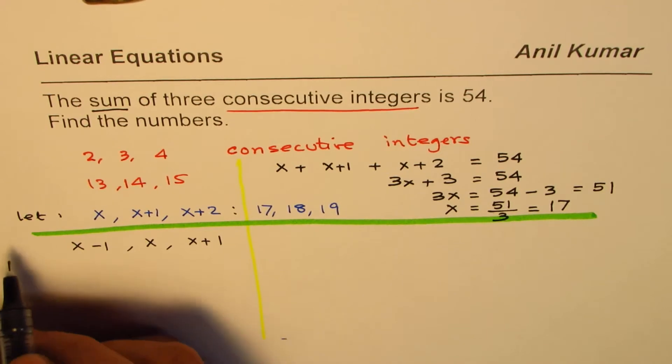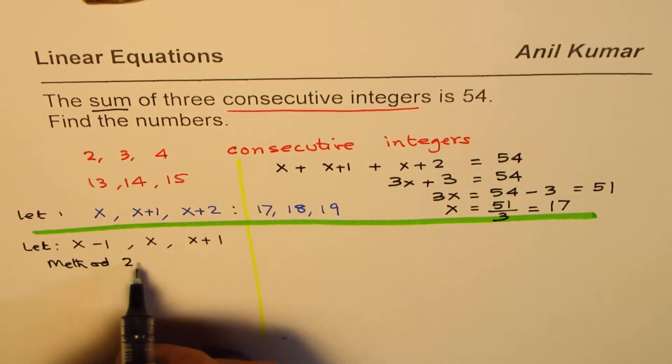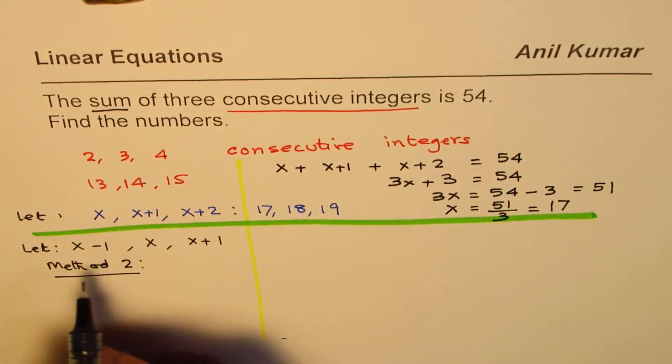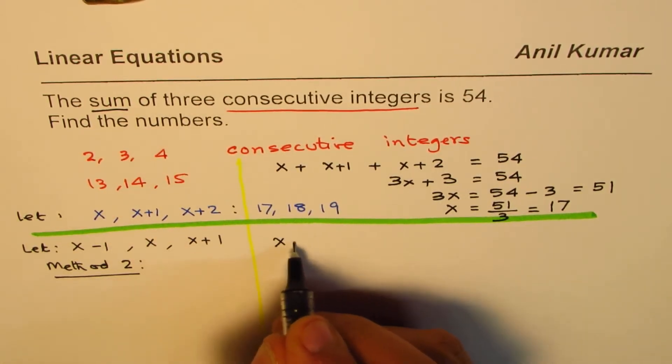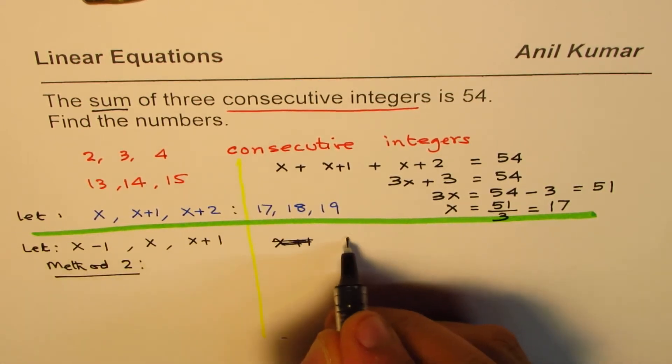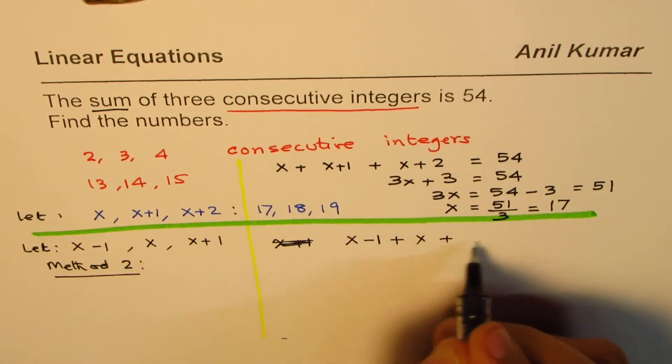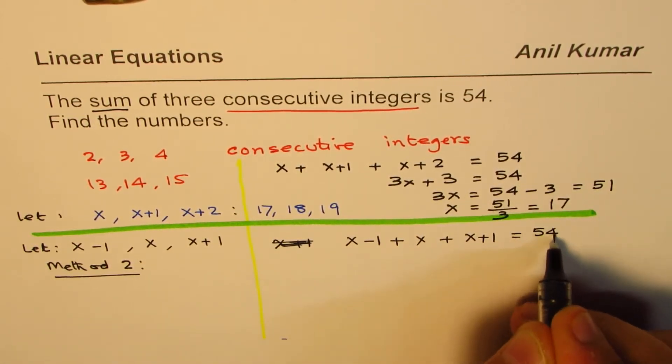Now, if we define like this, we are talking about method 2. So, these are our variables now. Let's do it. So, we are given sum of consecutive numbers. We could do x minus 1. I mean, sorry, I wrote x plus 1. So, we write x minus 1 plus x and plus x plus 1. That should give me 54.